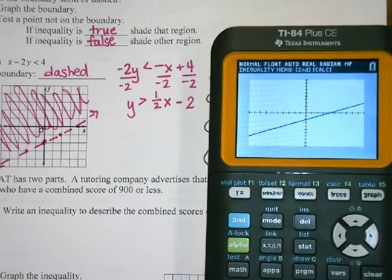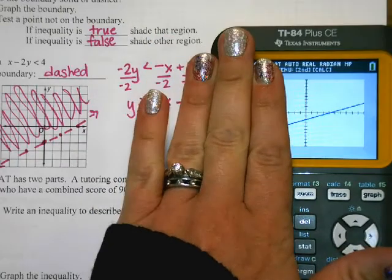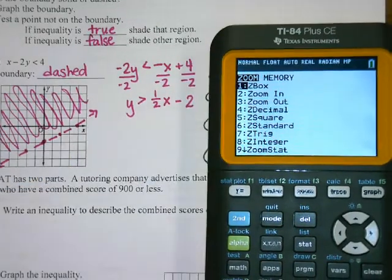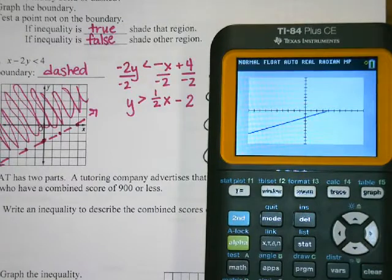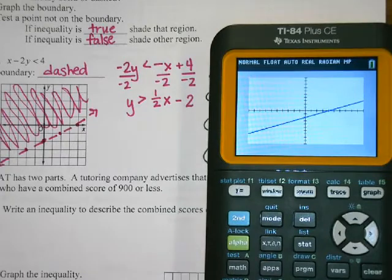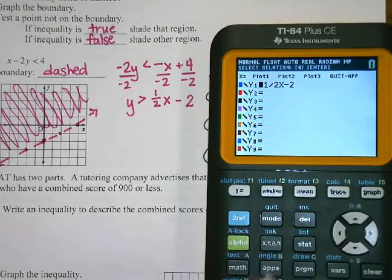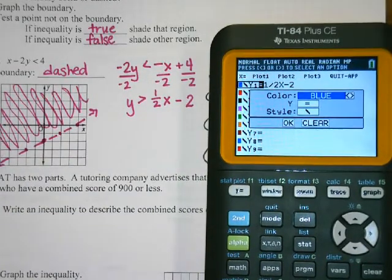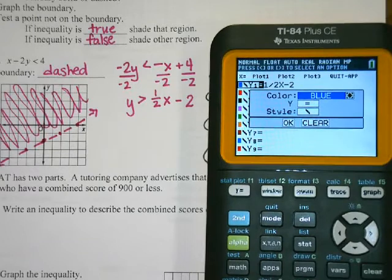Your calculator can actually shade for you. If you've got a funky window, you can do a zoom 6 — zoom 6 is standard and it'll get you back to a 10 by 10 window. Now we're going to make our calculator shade and tell us whether it's dotted or solid. Go back to Y-equals and arrow all the way over to the left. If you have a skinny rechargeable one, that menu will pop up right there.